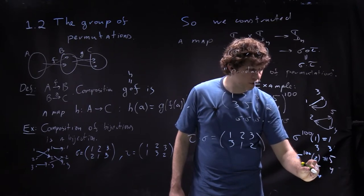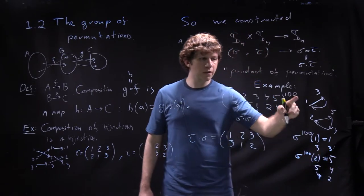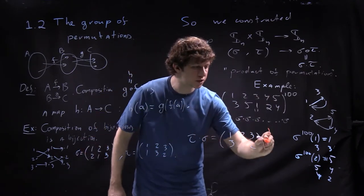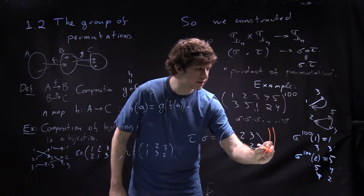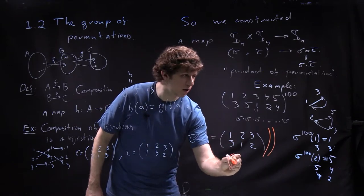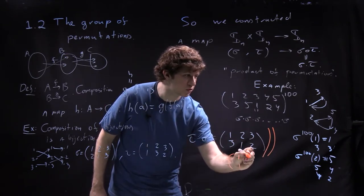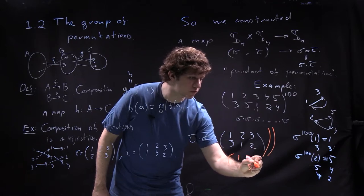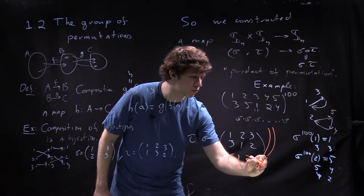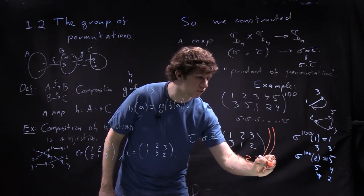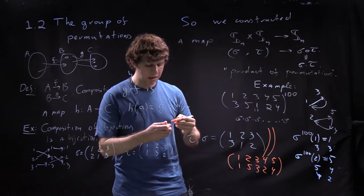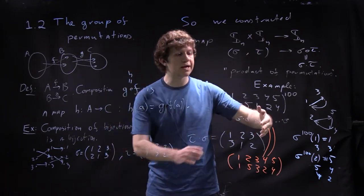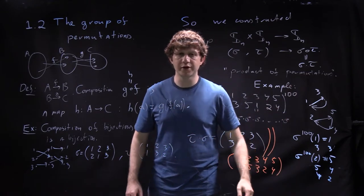So my permutation sigma to the power 100 can be easily computed: 1 goes to 1, 2 goes to 5, 3 goes to 3, 4 goes to 2, 5 goes to 4. That's what a power of a permutation looks like.